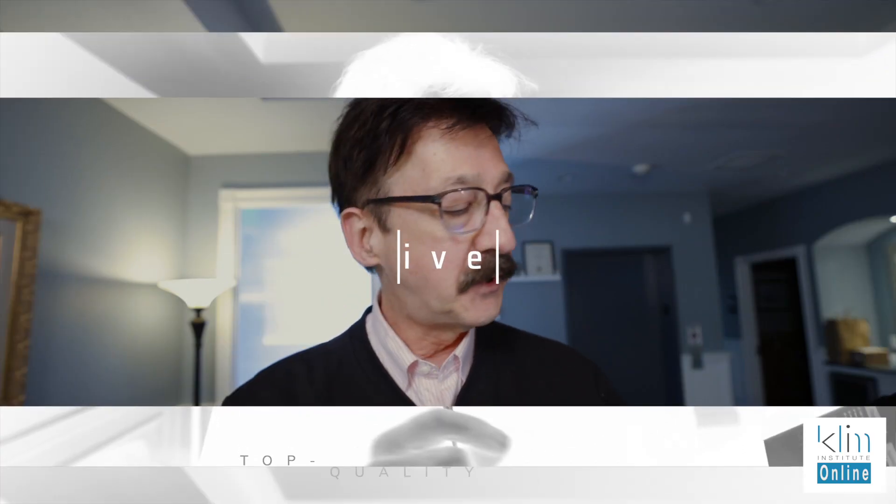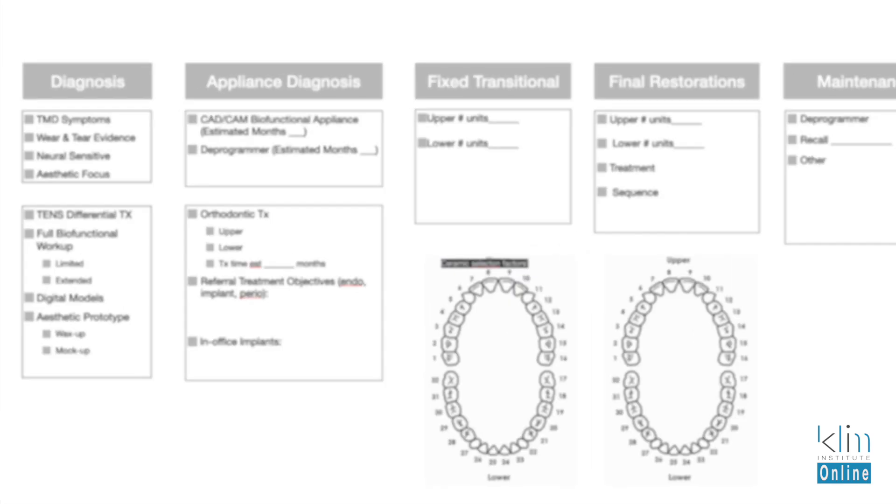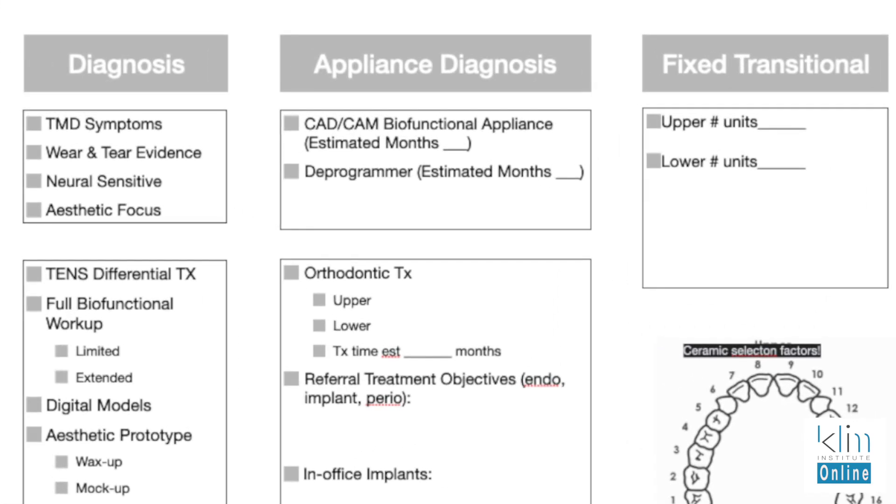Looking at our diagnostic chart, there are key things to examine. Number one: do they have TMD symptoms? TMD symptoms can be a lot of different things. I'm mainly looking for head or neck pain — it could be joint pain, but usually it's muscle pain, particularly if they talk about having headaches or neck aches. We need to dig a little deeper into that.